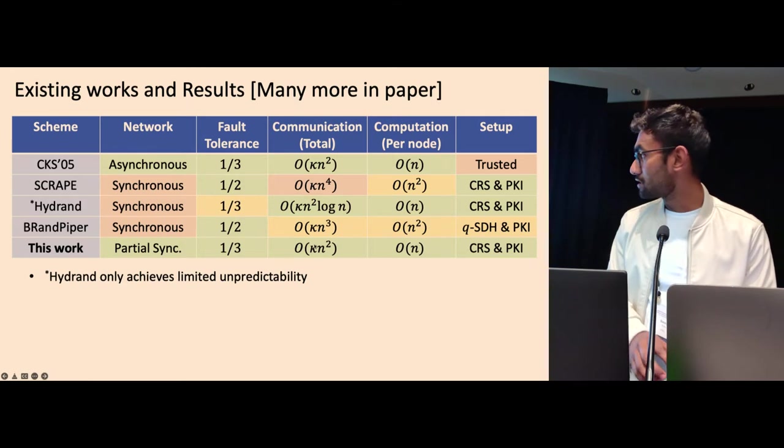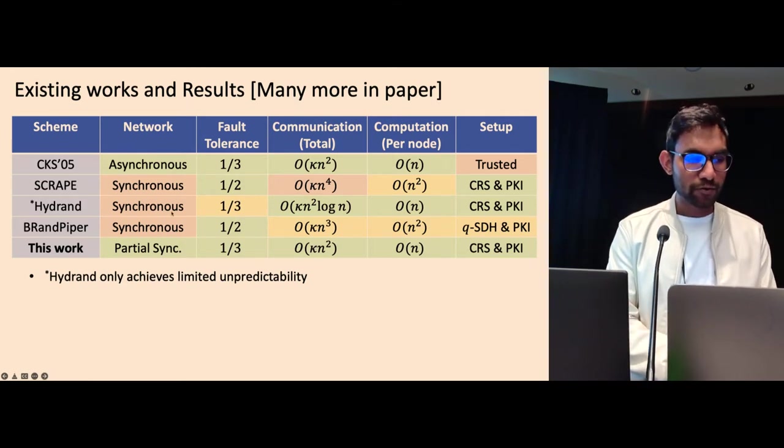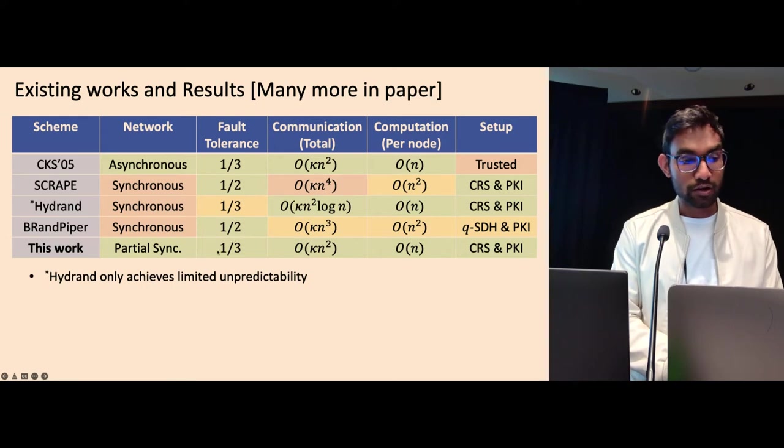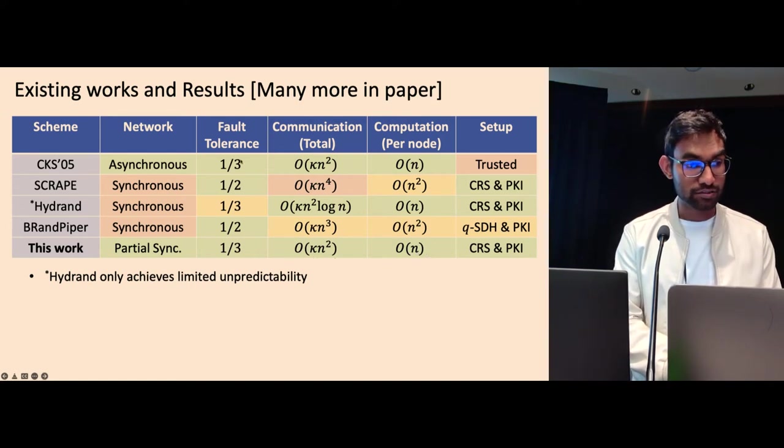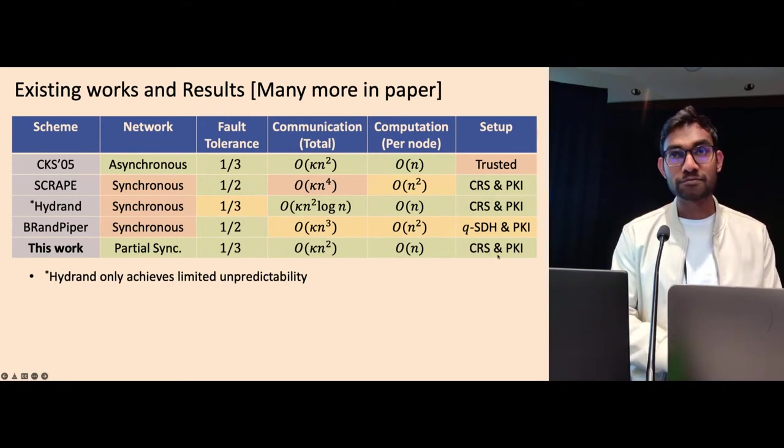So this is our result. In this paper, we give a partially synchronous distributed Randomness Beacon that tolerates up to one third failure, and has communication cost of kappa n square, and computation cost of order n. So this matches, in terms of performance, the CKS 05, but only requires a common random string, and public infrastructure.